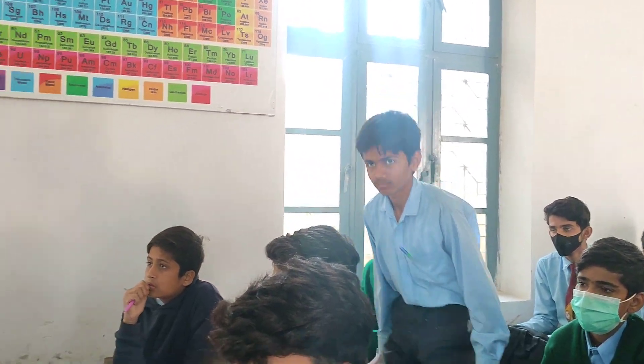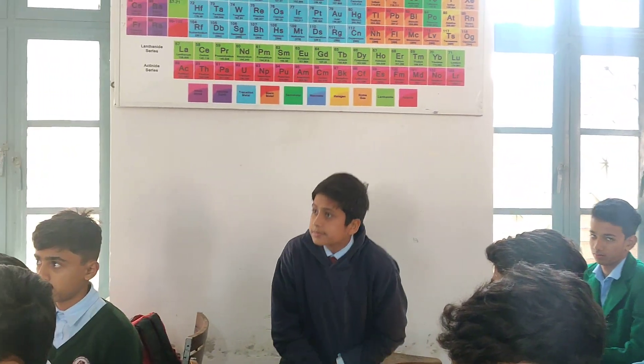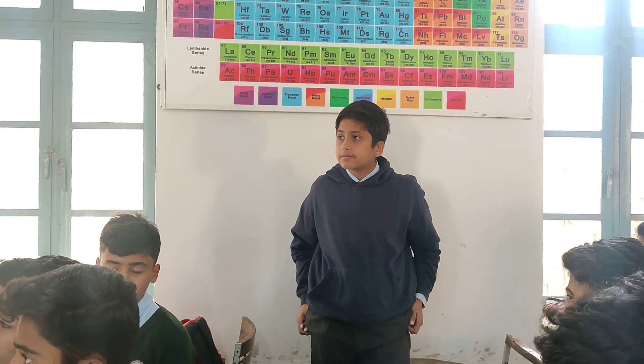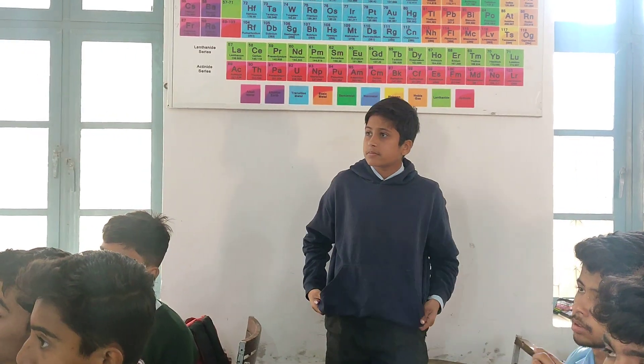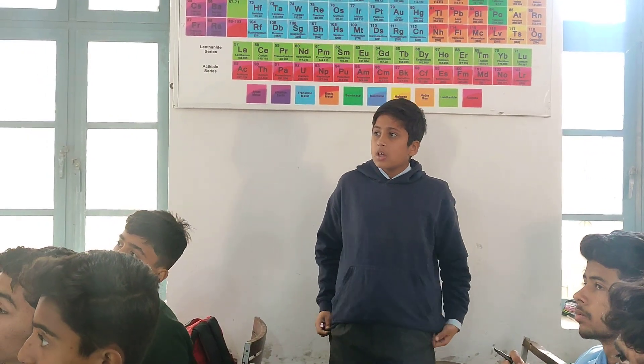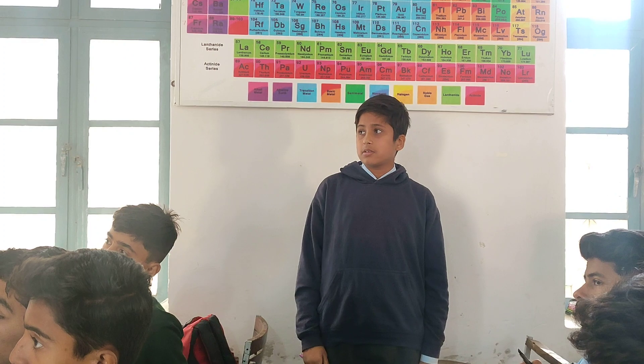Very good. Mr. Taimur Hamjad, what type of chemical reaction takes place in an electrolytic cell at the anode? Oxidation takes place in the electrolytic cell.